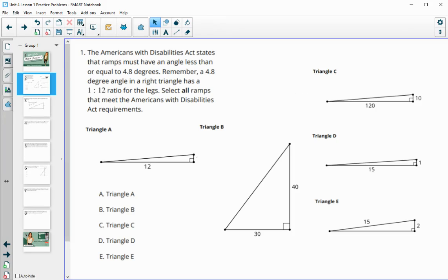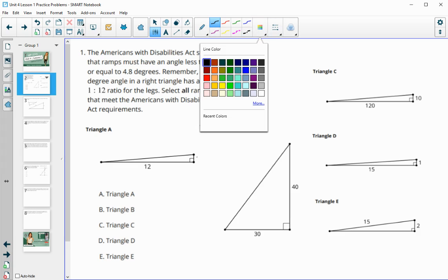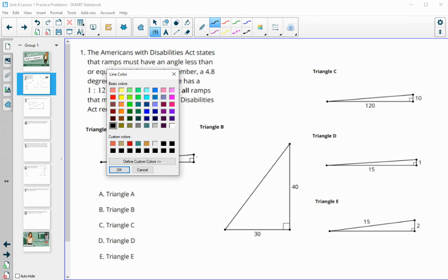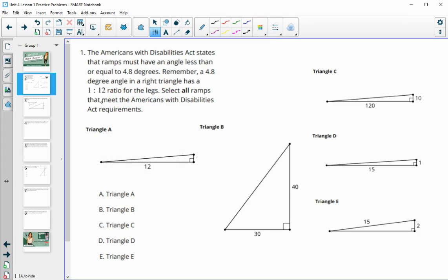The first one talks about the Americans with Disabilities Act and reminds you that in order to meet ADA regulations, the angle needs to be less than or equal to 4.8 degrees, which also is a ratio of 1 to 12. So you either need to measure the angle of steepness and it needs to be less than 4.8 or you need to be able to see that the ratio is less than a ratio of 1 to 12.